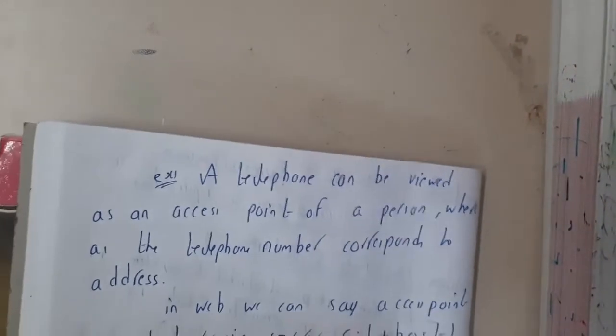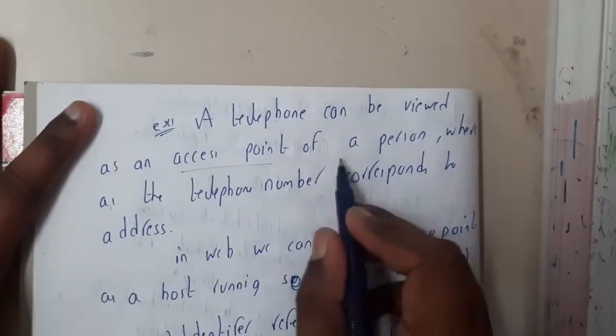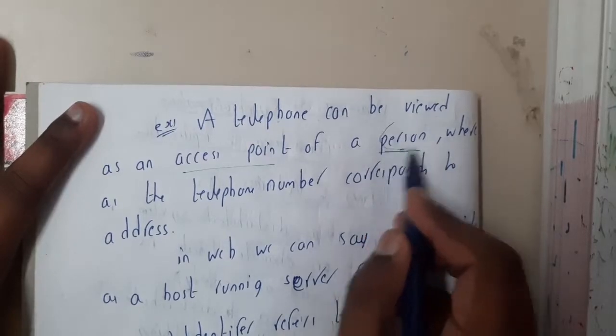Okay, so now I think everyone is a bit clear with the terminology. So now let us take a small example. So a telephone can be used as an access point of a person, so basically a person can access and use it.